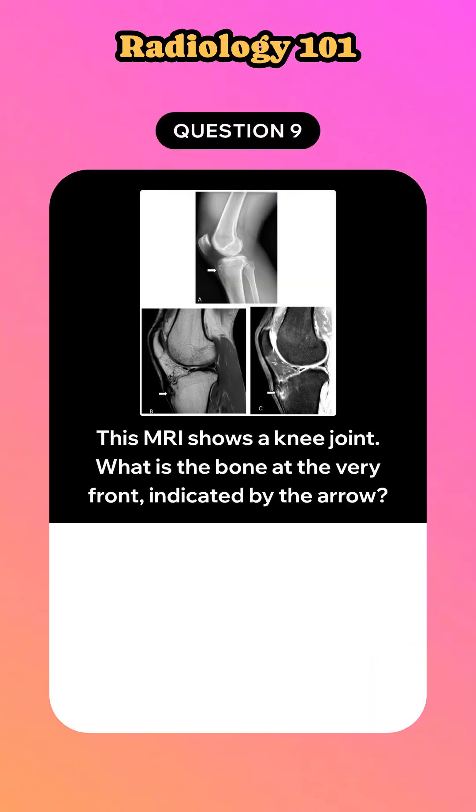This MRI shows a knee joint. What is the bone at the very front indicated by the arrow?